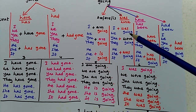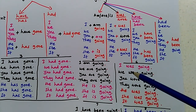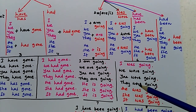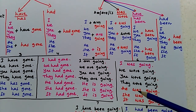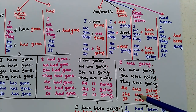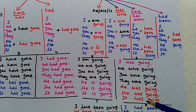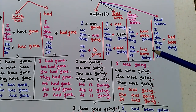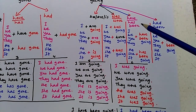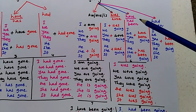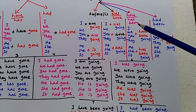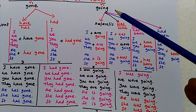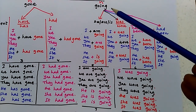By adding was or were, we get the table: I was going, we were going, you were going, they were going, he was going, she was going, it was going. And next, another table we can get by adding have or has been to verb four, that is 'going'.